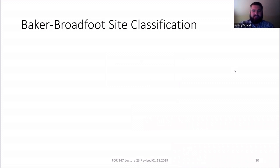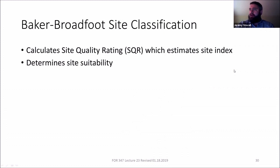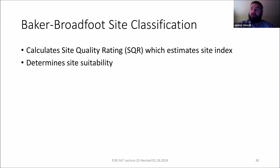That was just one page — cherry bark oak has three or four pages total. You add all those numbers up and they give you an SQR. They're not calling it a site index because you didn't estimate a tree height or age, since that species wasn't on the site. That's where this tool is most useful: an old field, a cutover pine site, or a hardwood stand where cherry bark oak was high-graded out and isn't there anymore — but it may have been a cherry bark oak site historically.